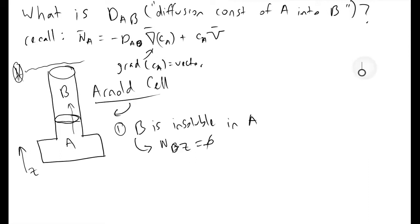What I will do is first redraw my Arnold cell so I can start defining some variables to work with. So this is species A, we will call this point here Z1, call the point at the top Z2. And we'll call this Z equals zero. This upward axis is our Z axis.